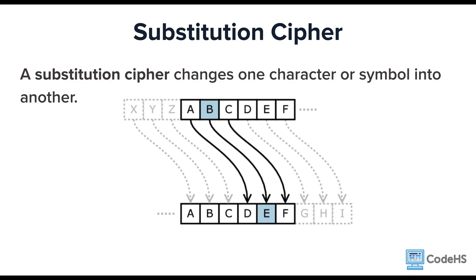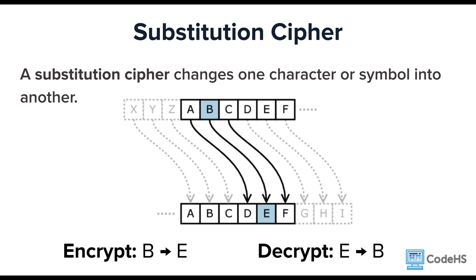The Caesar cipher is classified as a substitution cipher. This means that each character or symbol of the plain text is substituted by another character to form the cipher text. If you know the key for each character, such as Bs are substituted with Es, then you would just reverse that process to decrypt the code back to the original message and change all Es back to Bs. Alright, now it's your turn to explore. Have fun!